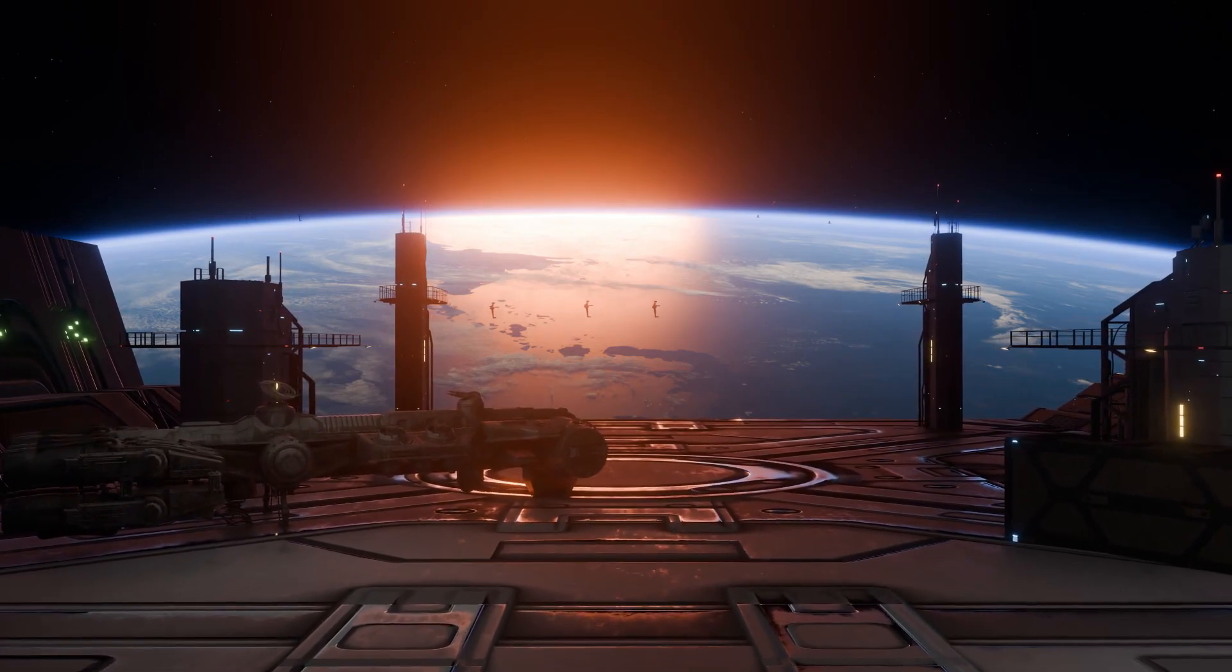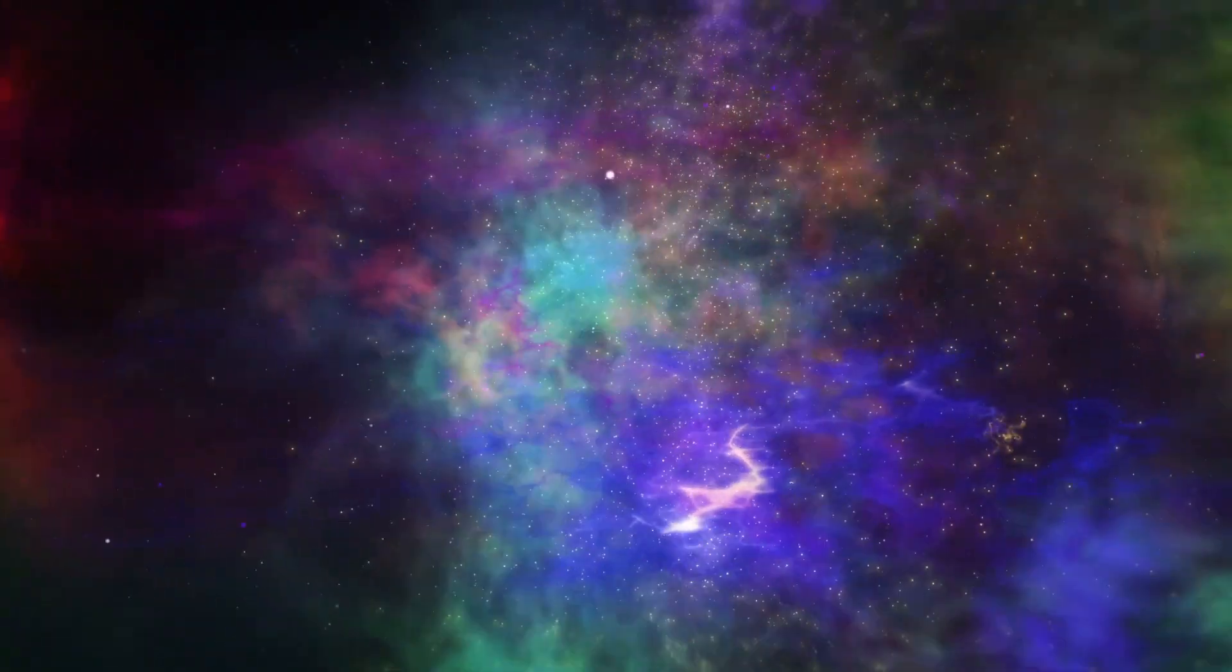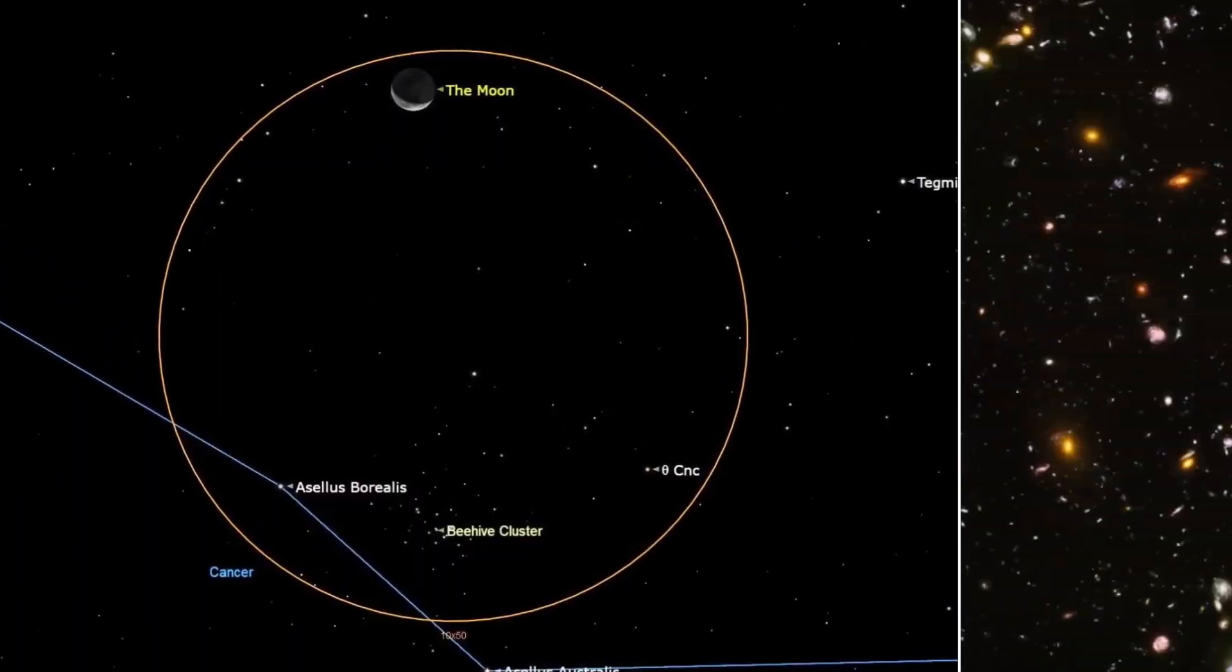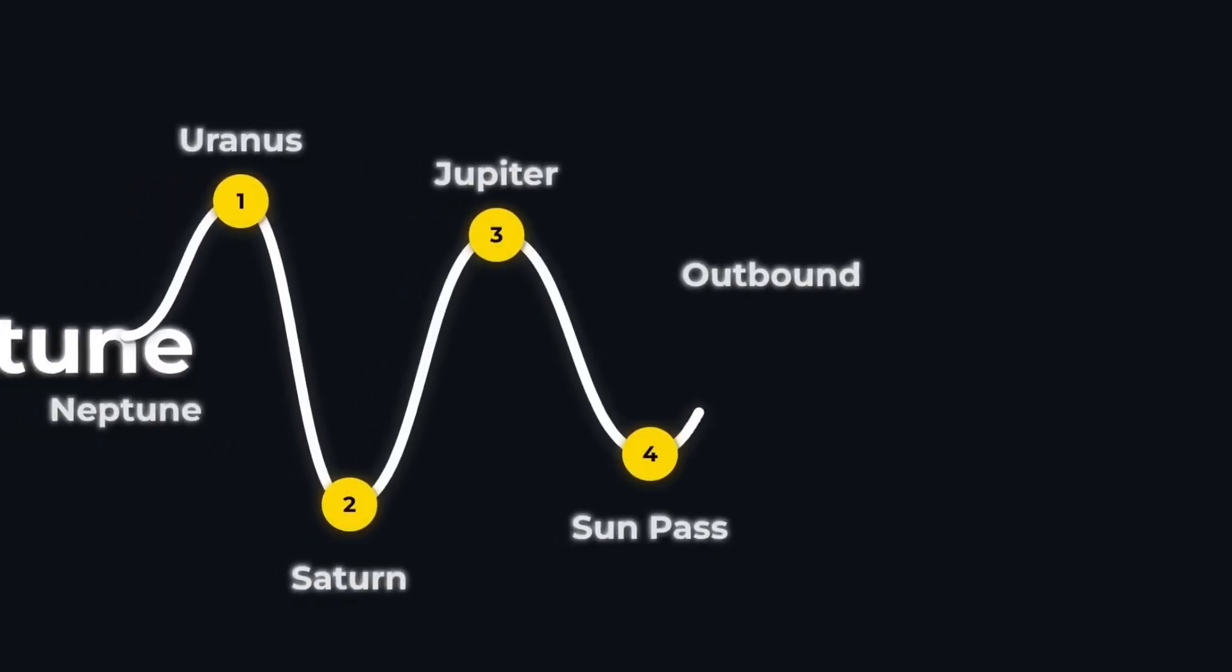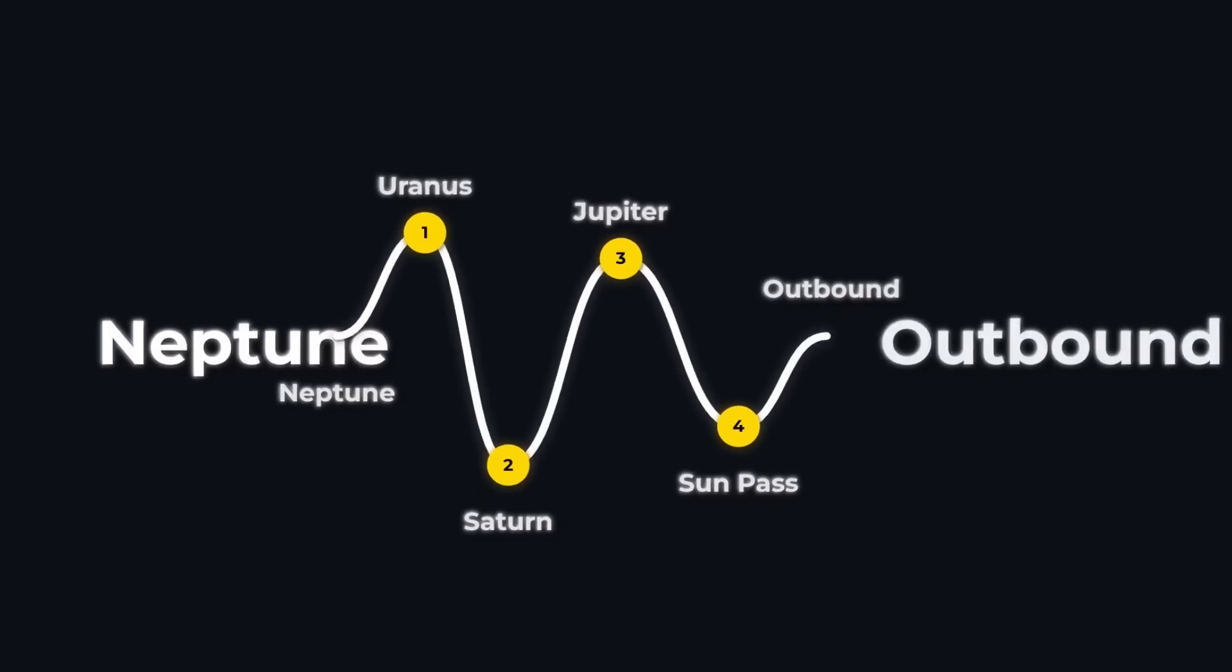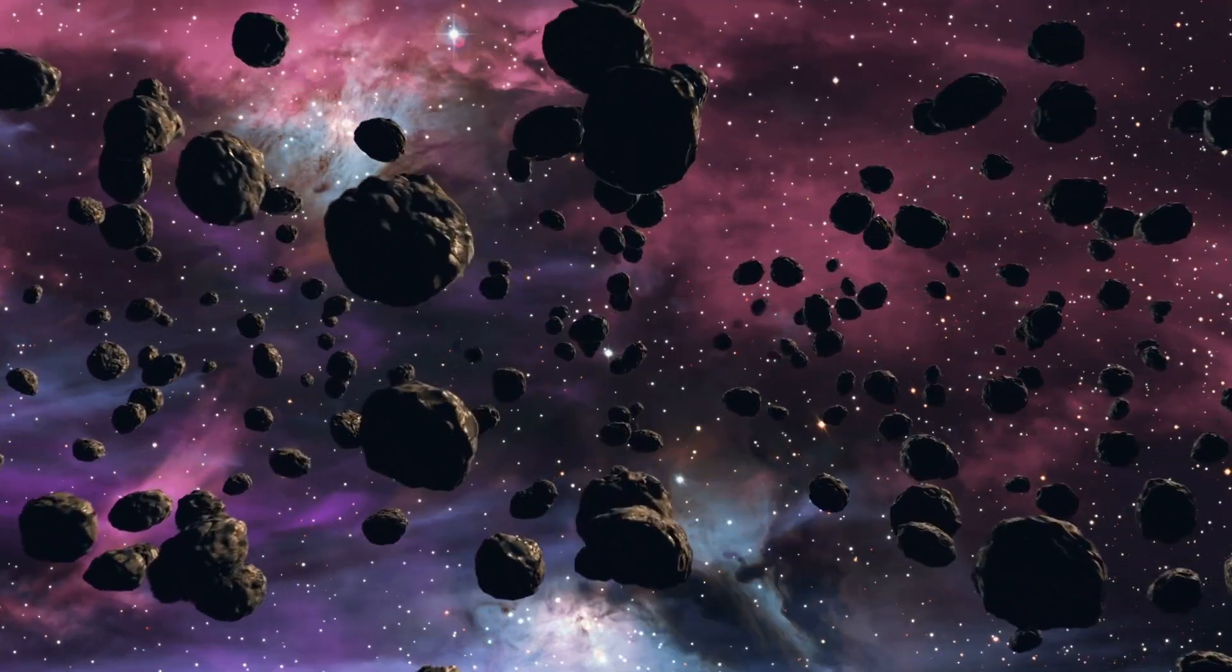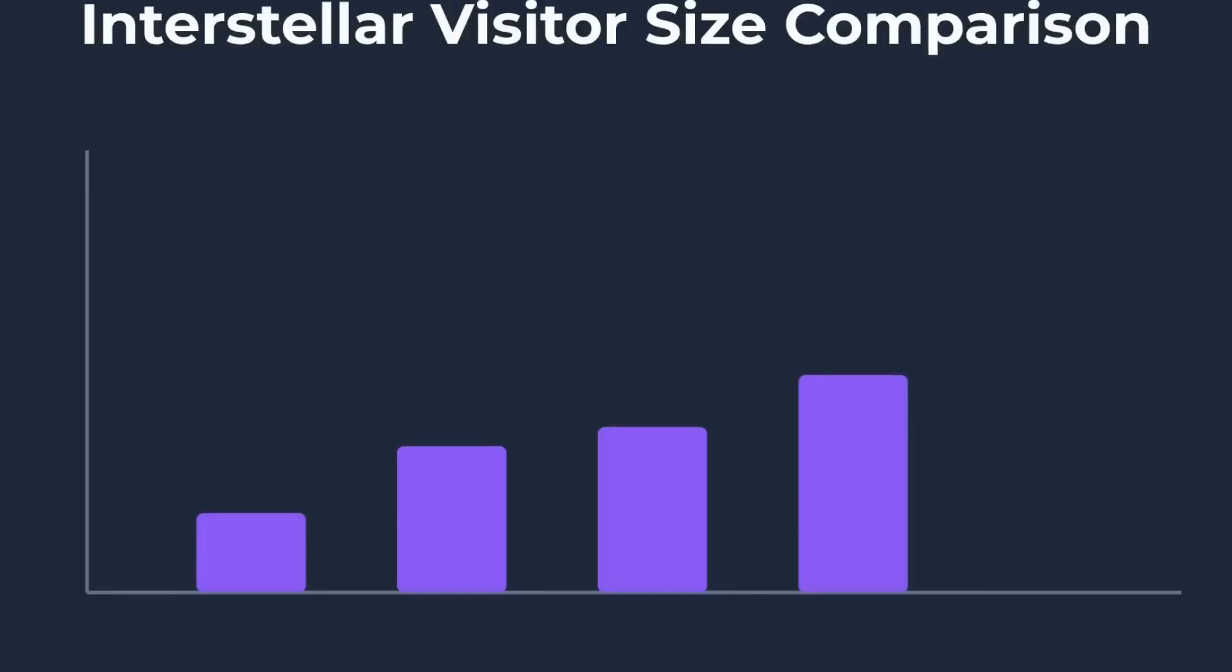Each pass of 3I Atlas raises an unsettling question that echoes the Dark Forest hypothesis. This theory imagines the universe as a silent, dangerous jungle where survival depends on remaining unseen. Any civilization that reveals itself risks annihilation. If an intelligence wanted to observe us, it would send probes that gather data from multiple worlds and then slip away, leaving only questions behind.